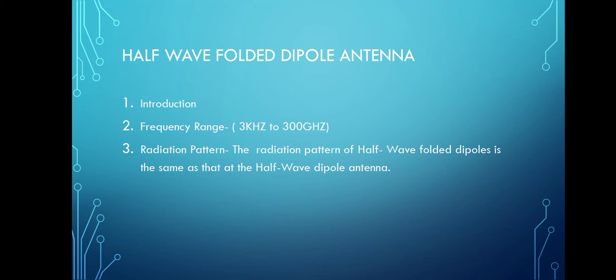The frequency range of the half-wave folded dipole antenna is around 3 kHz to 300 GHz, mostly used in television receivers. The radiation pattern: this antenna uses an extra conductor element — a wire or rod — compared with the previous dipole antenna. It can be extended by placing a few conducting elements in parallel with insulation in between, in an array type of antenna.